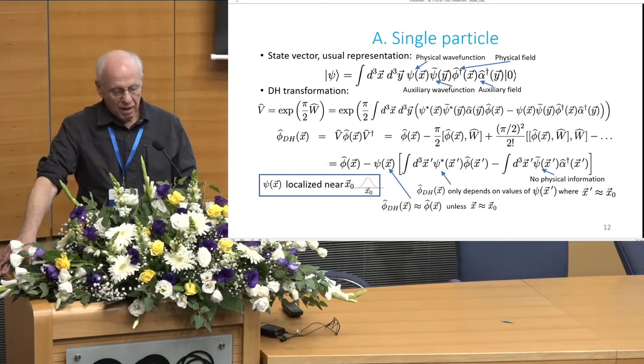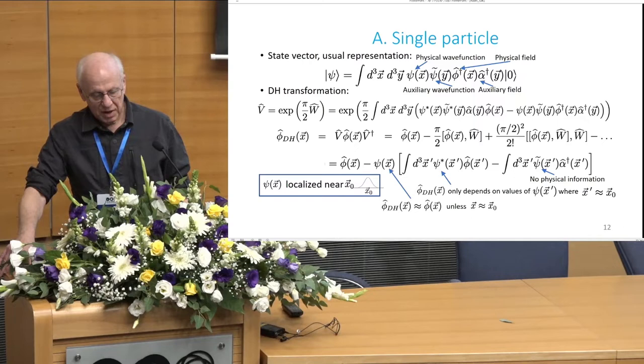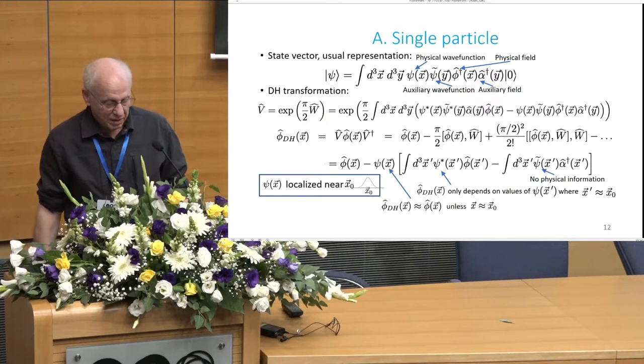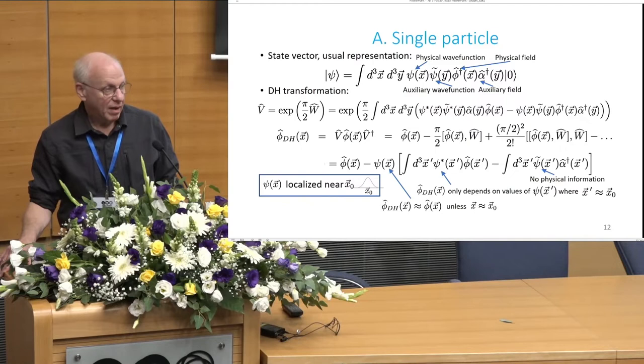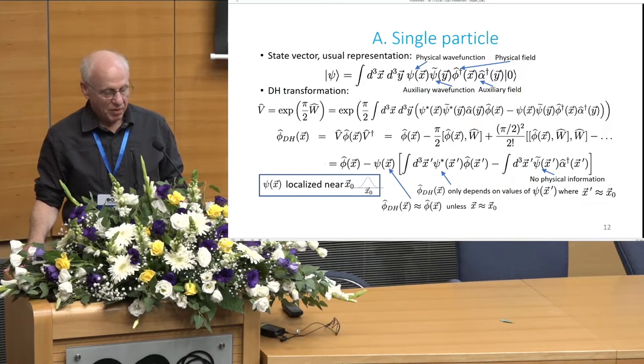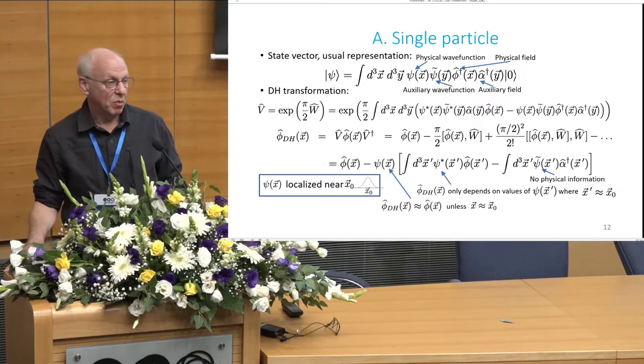In the usual representation, that is to say, before we apply the Deutsch-Hayden transformation, they only appear in the state vector, not in the Hamiltonian, not in any other operators corresponding to any measurement. So any physical predictions will be independent of the values of those wave functions. Physical predictions would be unchanged if we remove the wave functions and the auxiliary operators. Why do we have them in there? It's because with those auxiliary fields in there, we can have effectively local Deutsch-Hayden transformations. So example on a single particle, here's a state vector. It has a creation operator for the physical particle, for the auxiliary field, and associated wave functions. And we can write down what the Deutsch-Hayden transformation is that will map that state vector to the vacuum. And having an explicit form for that, we can apply that to the field operator and obtain the Deutsch-Hayden transformed operator.